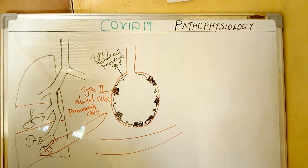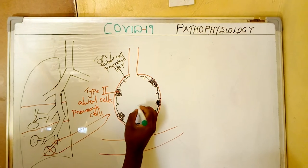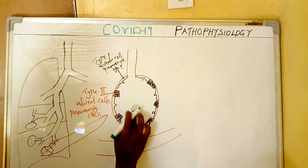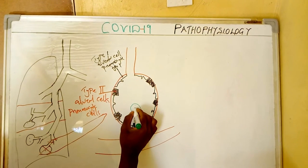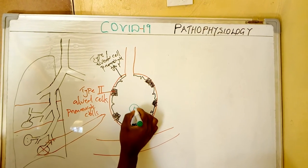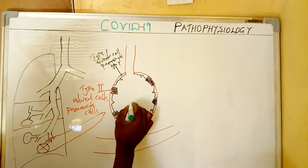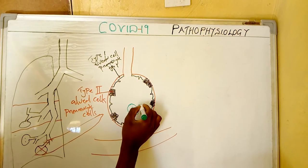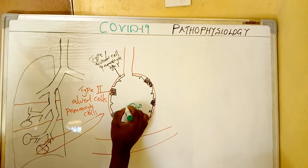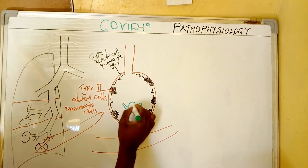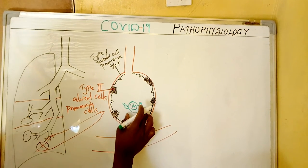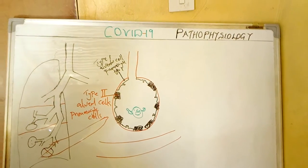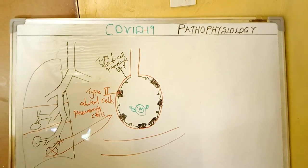This macrophage helps us — it fights against invading pathogens. We have the macrophage inside. This macrophage is strong; it is actually fighting the invading pathogens. That is the function of this macrophage inside the alveoli.